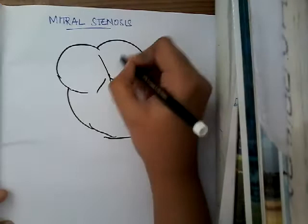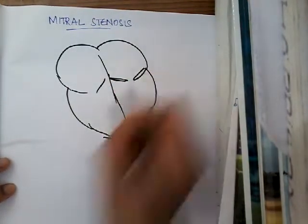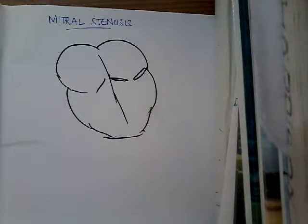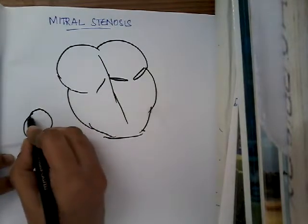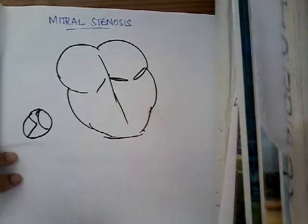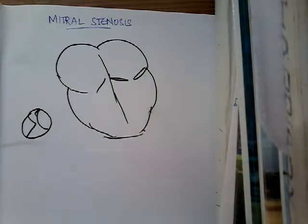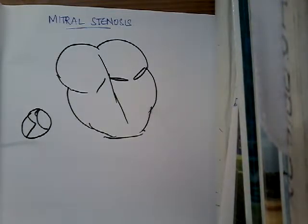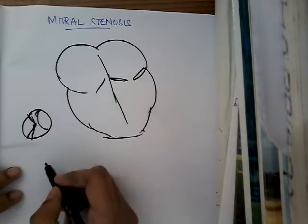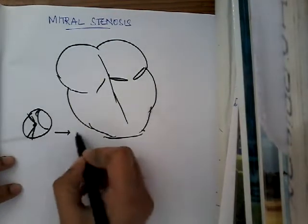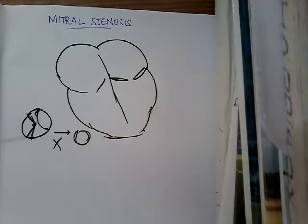This is the left atrium, left ventricle, and this is the mitral valve. Stenosis means the valve is stenosed — there is inability of the mitral valve to open. The mitral valve has two leaflets, not three. In mitral stenosis, the valve is not able to open fully.